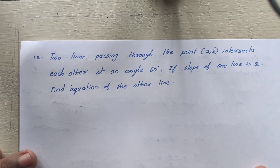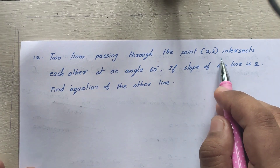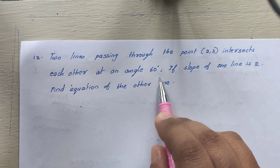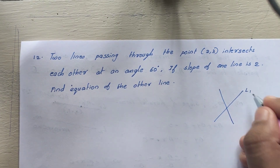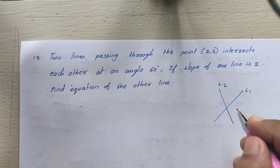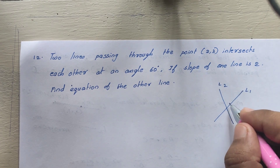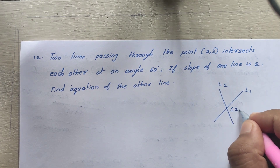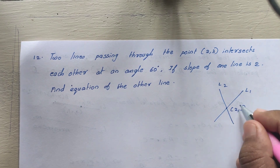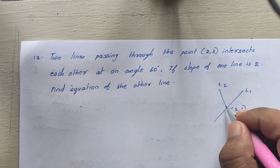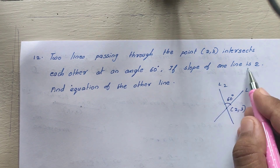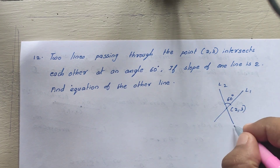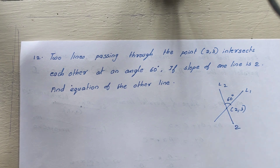Next problem: two lines passing through the point (2,3) intersect each other at an angle of 60 degrees. If the slope of one line is 2, we will find the equation of the other.